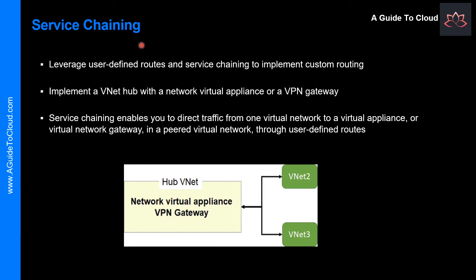Now let's understand Service Chaining. VNet Peering is non-transitive — this means that if you establish VNet Peering between VNet1 and VNet2, and between VNet2 and VNet3, the peering capabilities do not apply between VNet1 and VNet3. However, you can leverage user-defined routes and service chaining to implement custom routing that provides transitivity, allowing you to implement a multi-level hub-and-spoke architecture and overcome the limit on the number of VNet pairings per virtual network.